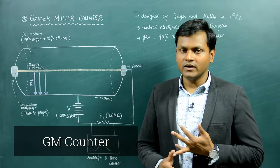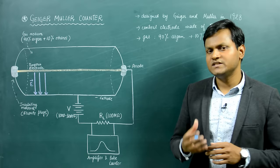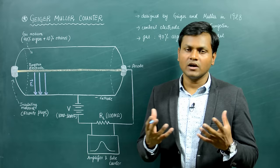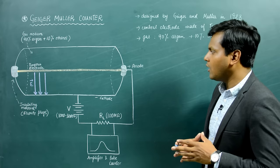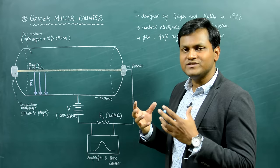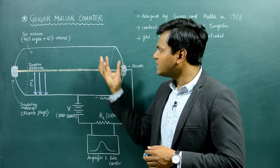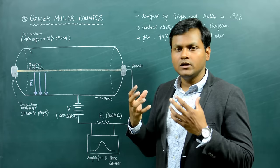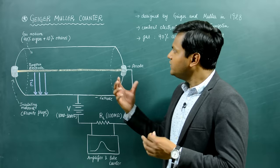The principle on which this GM counter is based upon is very interesting. But before we delve into that, let's first talk about the construction. The construction mainly consists of the Geiger-Müller tube, which is nothing but a hollow metallic cylinder. This metallic cylinder is hollow from inside and it contains some kind of a gaseous medium, usually consisting of a noble gas like argon and a mixture of other alcohol compounds.